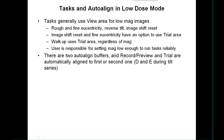Tasks work differently in low-dose mode because they generally use the view area instead of going down to their own preferred magnification. That applies to rough and fine eucentricity, the reverse tilt operation, and the image shift reset operation. Both image shift reset and fine eucentricity have an option to use the trial area instead, which some people want to do to keep as much dose as possible off the record area by avoiding the view. Walk-up uses the trial area regardless of mag, since we're going to be in a tilt series using the trial area to track as we tilt down, so we should be walking up with that as well.